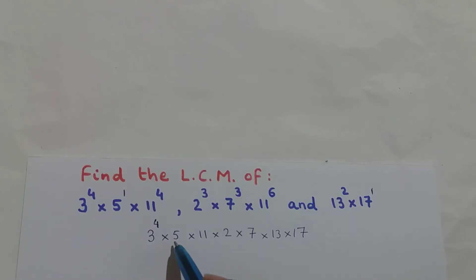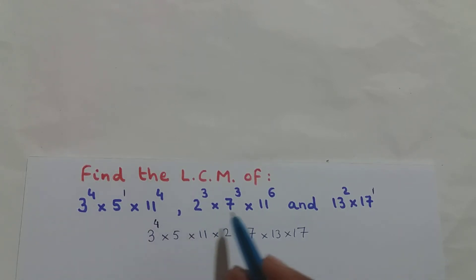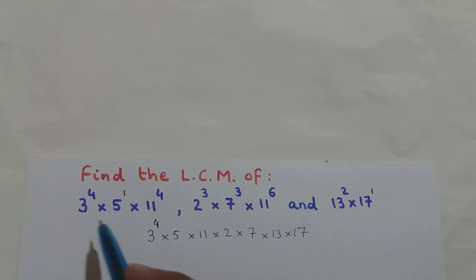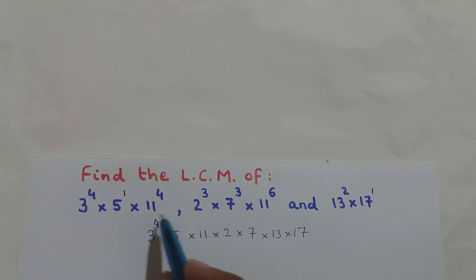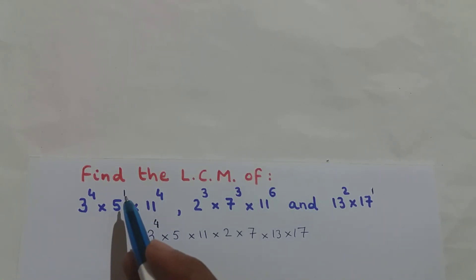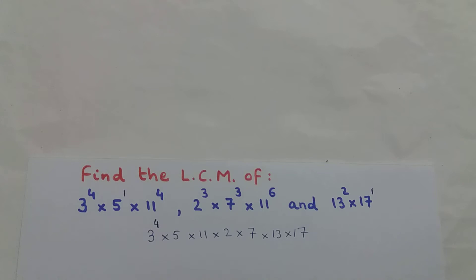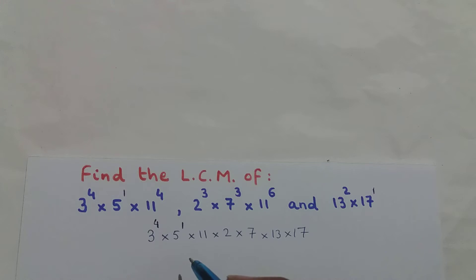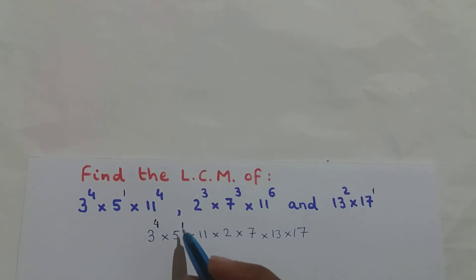Now, what is the exponent of base 5? Base 5 doesn't occur in the second or third expressions. In the first expression I have 5 raised to the power of 1. So the exponent of base 5 is 1.